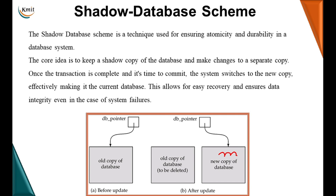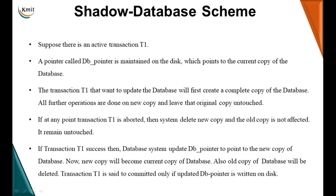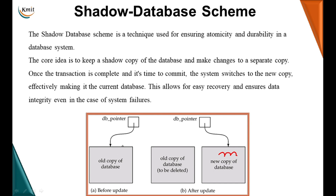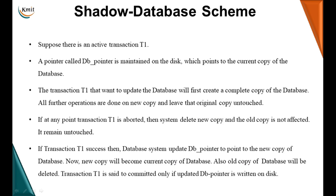Let's see how it is done. Suppose there is an active transaction T1. A pointer called the db pointer is maintained on disk, pointing to the current copy of the database. The transaction T1 that wants to update the database will first create a complete copy. All further operations are done on the new copy, leaving the original copy untouched. DML commands are always temporarily made and only written to the database once you say commit.